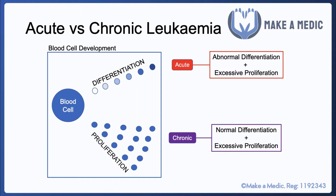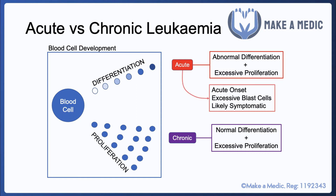How that manifests in real life is that acute leukemias tend to be, as the name suggests, relatively acute onset and you get an excess number of blast cells. These are the precursors that should only be found in the bone marrow, but given the abnormal differentiation and the excessive proliferation, you also get a lot of blast cells found within the peripheral blood.